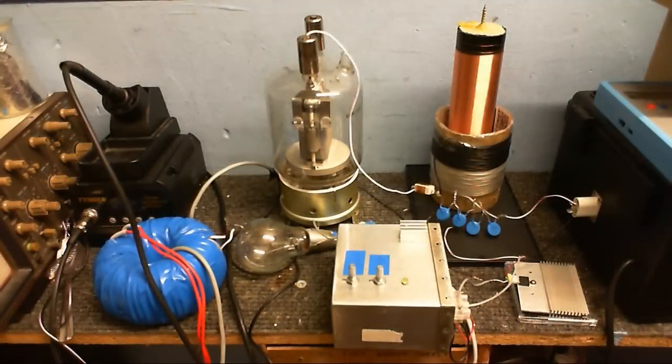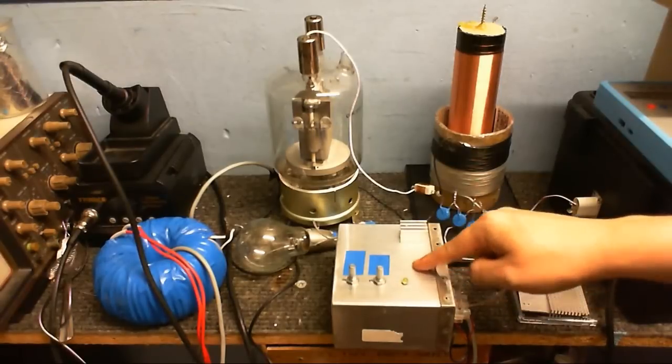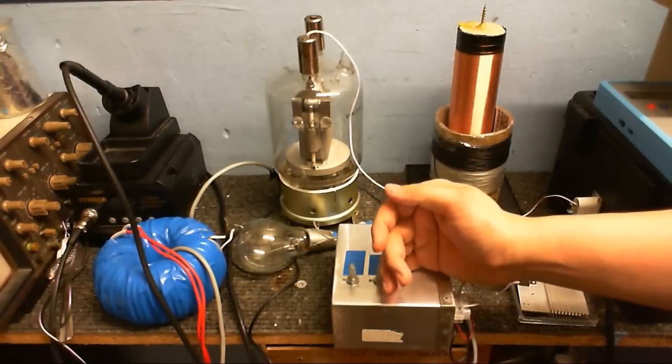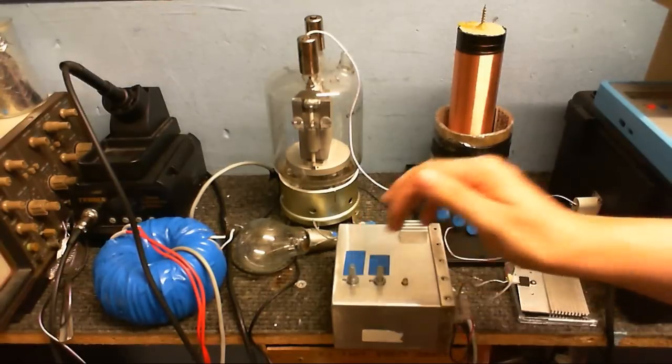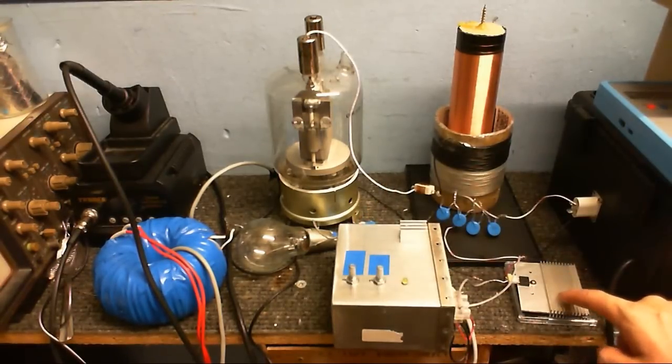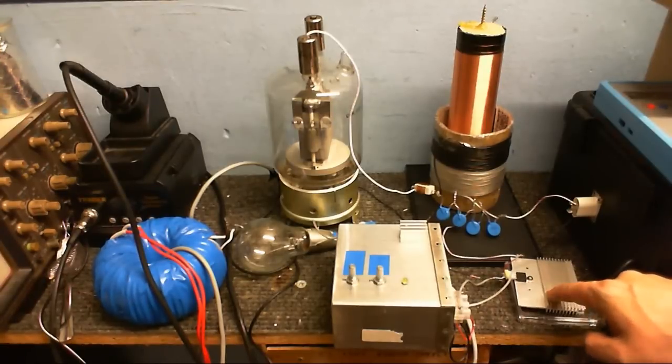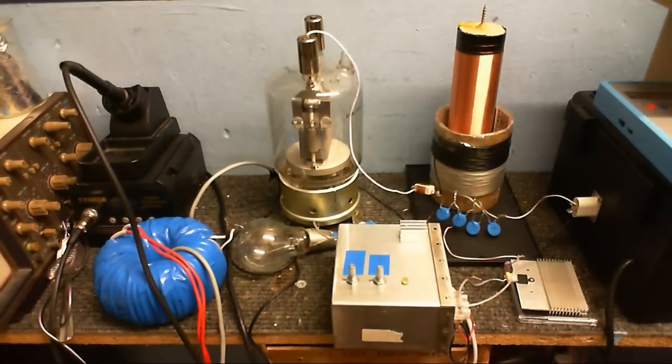So here's the vacuum tube Tesla coil circuit with a couple of new additions. I'm sure I don't need to point them out, but I'll tell you what they are. I've got this little box of tricks here with a blinking light on it. That's the staccato controller. And this thing here that looks like a transistor, that's actually a triac. And it's connected between the cathode of the valve and the ground.